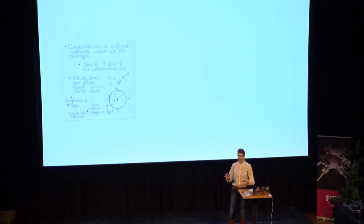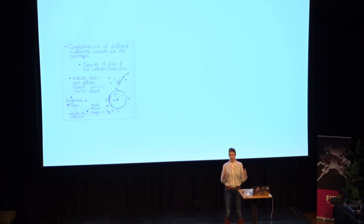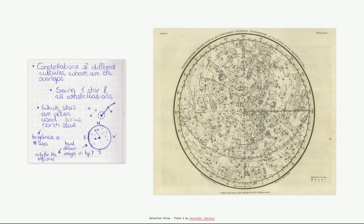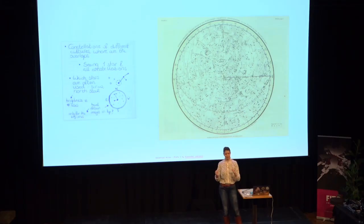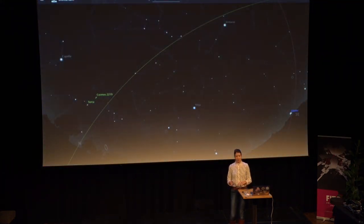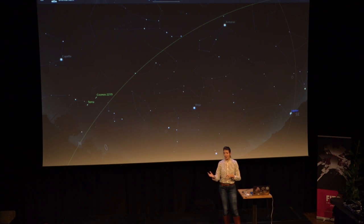I drew a very simple sketch in my notebook, but in my mind that sketchy circle would eventually become something inspired by these amazing historical sky maps. Full of enthusiasm to get started, I crossed my fingers hoping that diverse cultural constellation data would be available online. Thankfully, I quickly stumbled upon Stellarium, which is a great free planetarium software — and even better, it's open source.